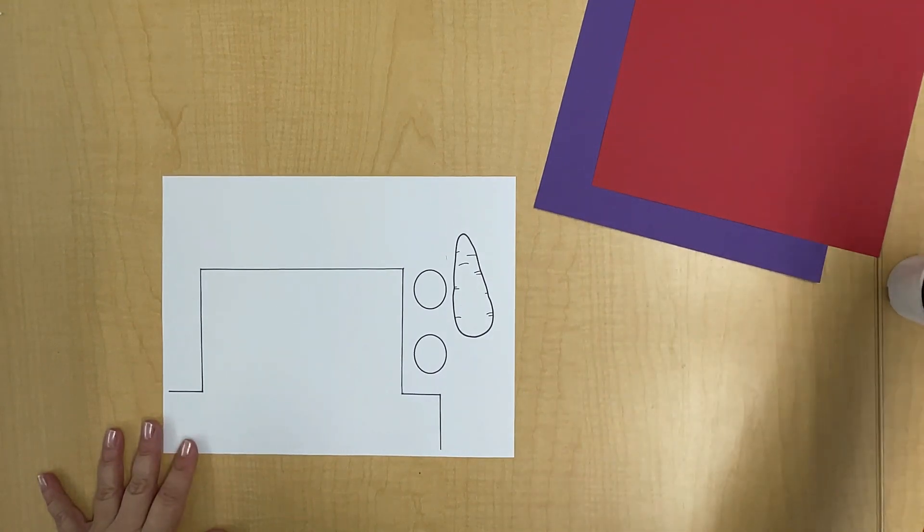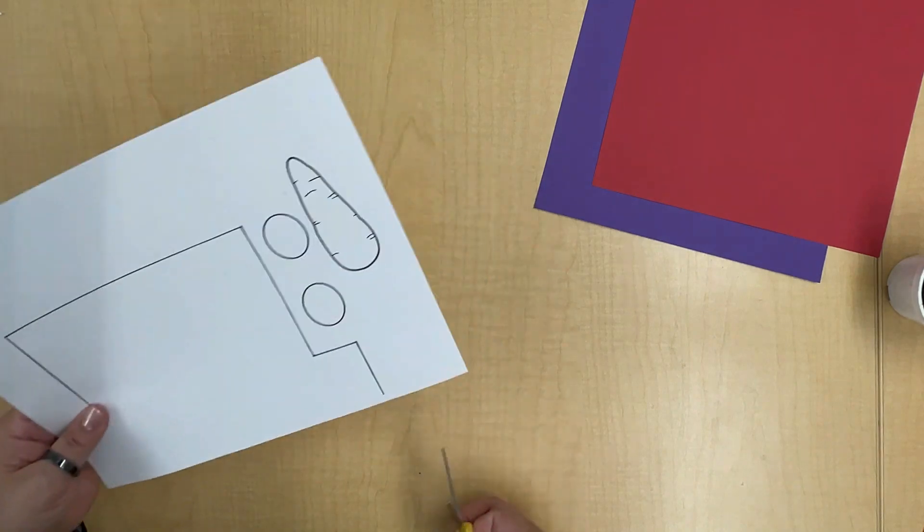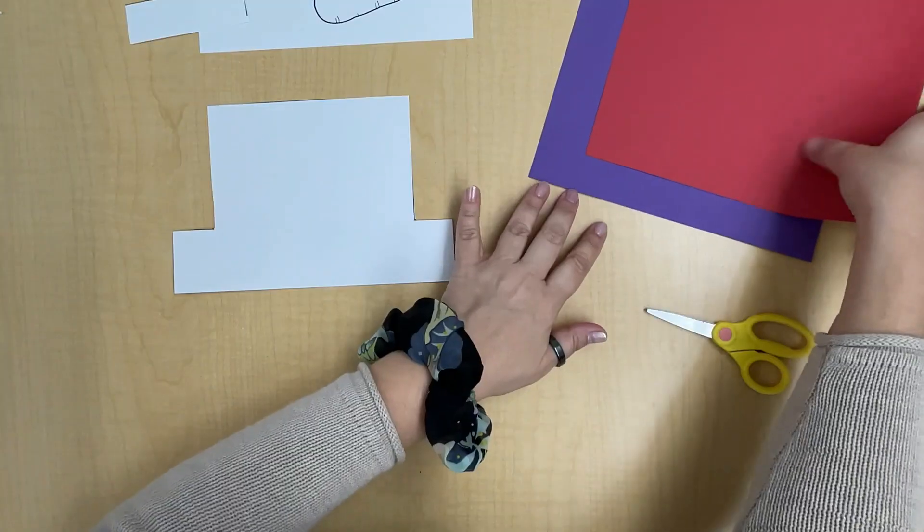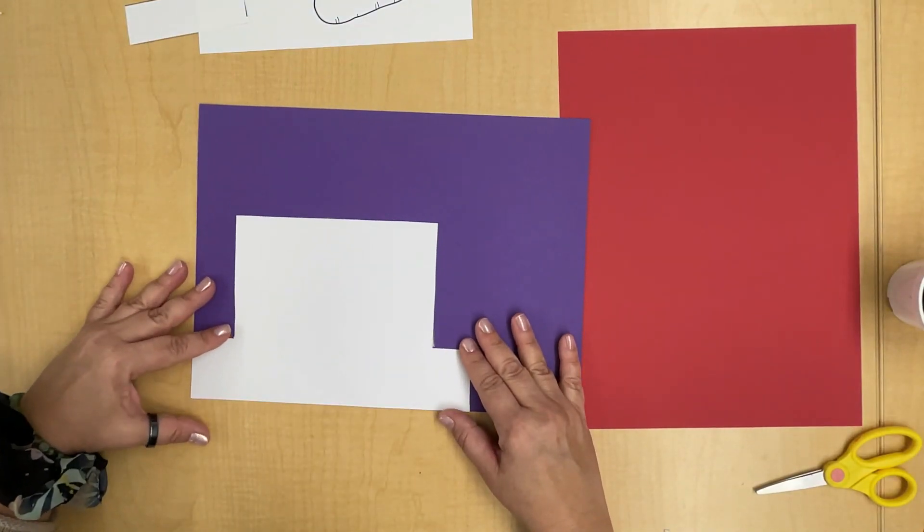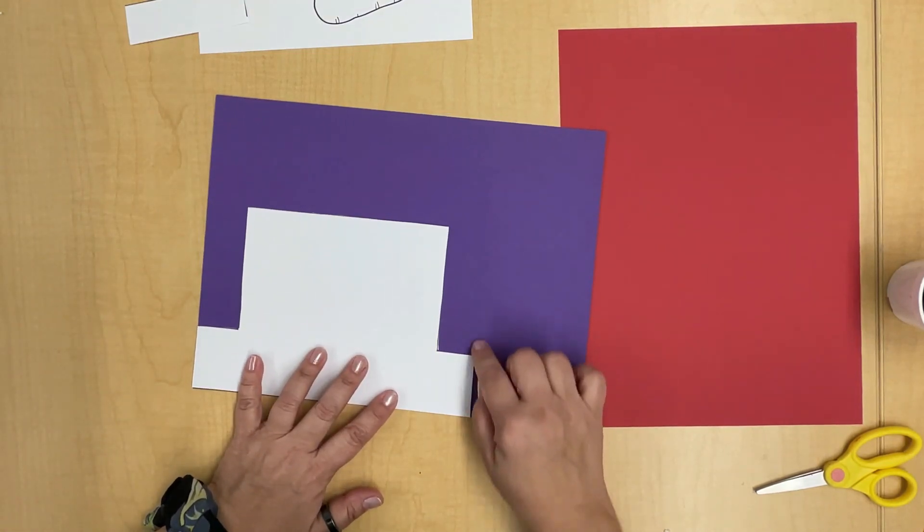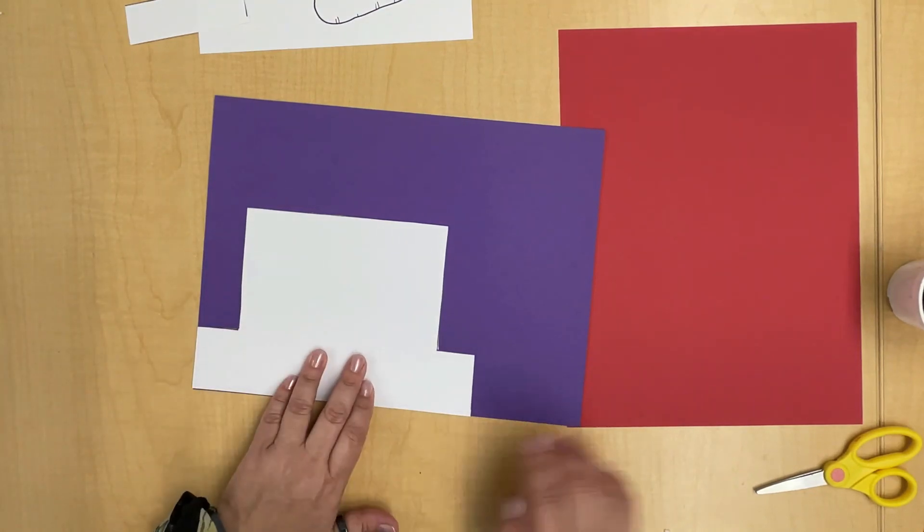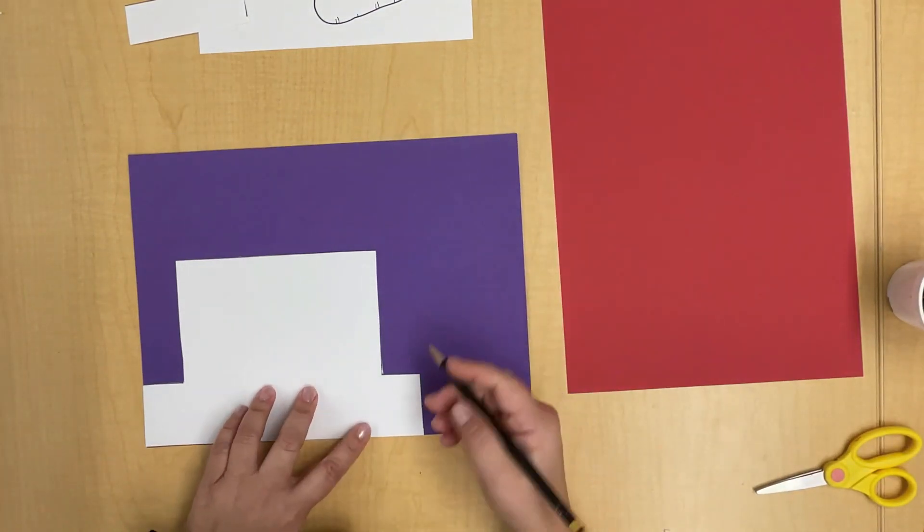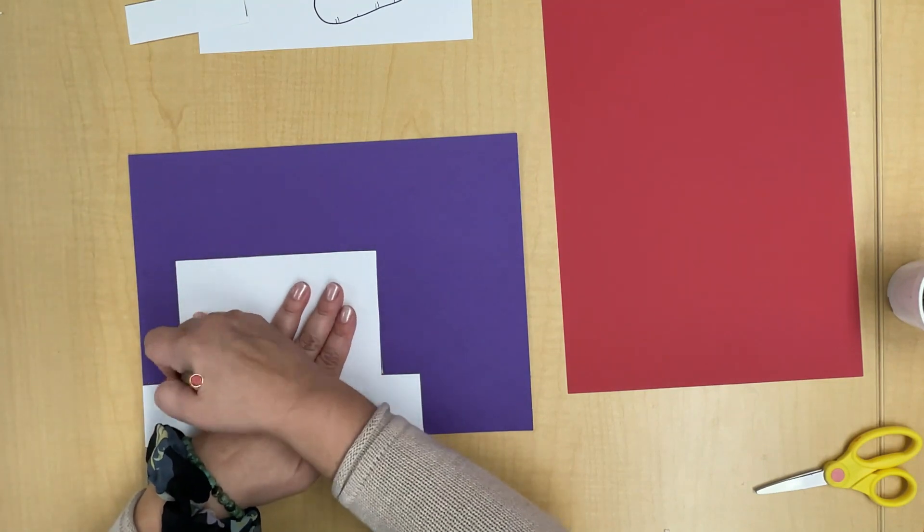Let's get started. The first thing we're gonna do is cut out our hat template. I think I would like a purple hat. I'm going to put the hat template on my purple paper, lining it up with the bottom and the side so I only have to cut around here. I'll take my pencil and trace.